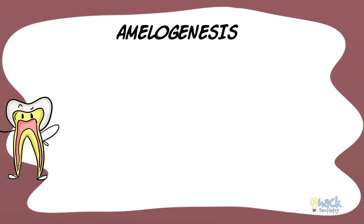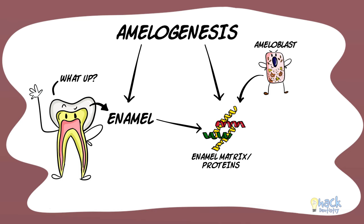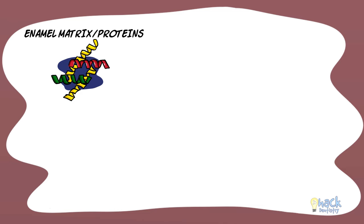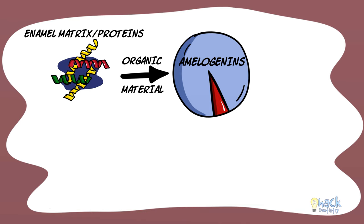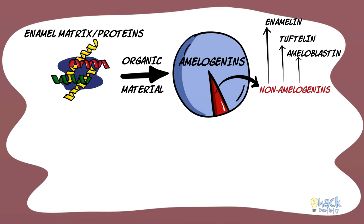Amelogenesis is the process of enamel formation, which starts with the deposition of enamel matrix by ameloblasts followed by the mineralization of the matrix. Enamel matrix essentially consists of organic material composed of two groups of proteins: amelogenins and non-amelogenins. Non-amelogenins consist of proteins enamelin, tuftelin, and ameloblastin. The amelogenins form the bulk of the enamel proteins, comprising at least 90%.